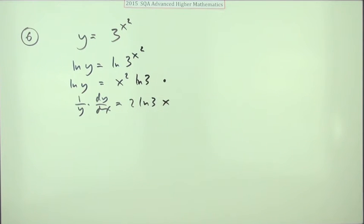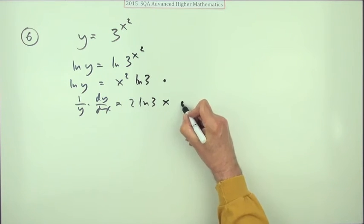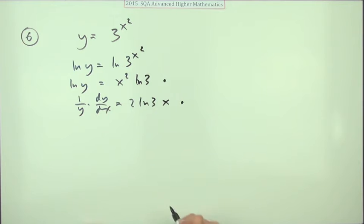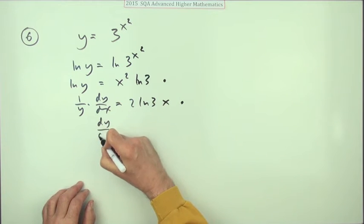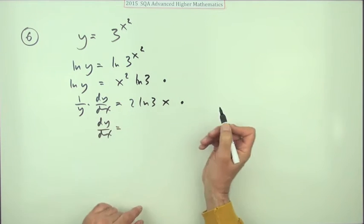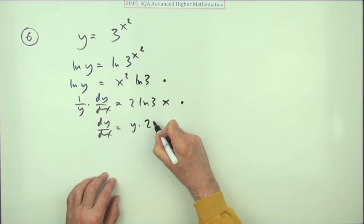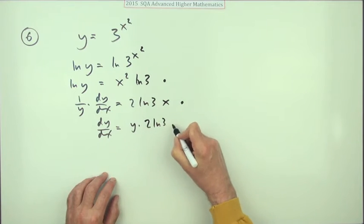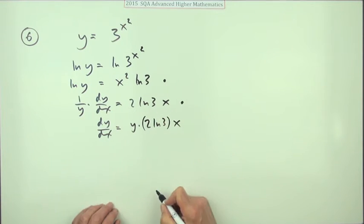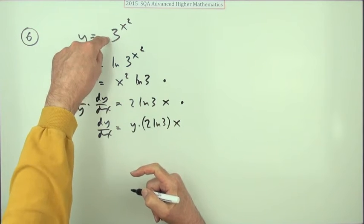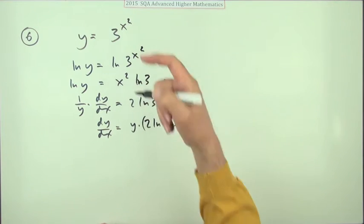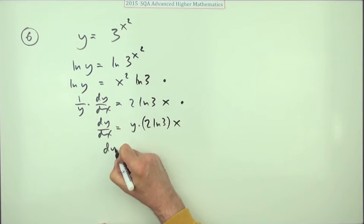So that was a mark for the differentiation, and then it's just a case of tidying up. So dy/dx will be y times that, whichever way you want to write this constant. Maybe I'll just put in a bracket x.